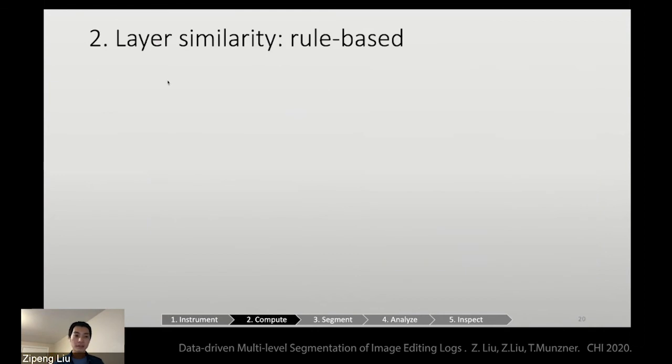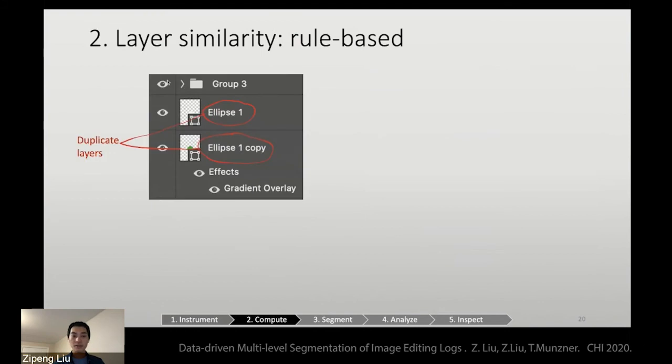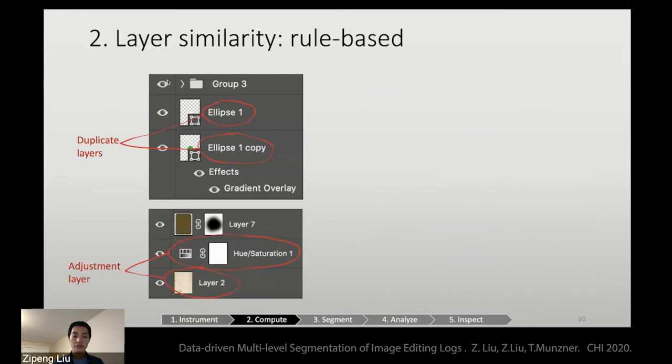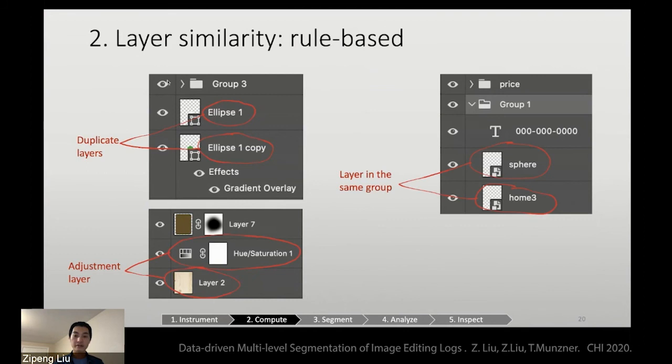The second measure is layer similarity. We are using a rule-based approach. For example, a layer ellipse 1 copy is the duplicate layer of ellipse 1. And this one shows two layers, one are the adjustment layers of another. And layer sphere, layer home 3, they are layers in the same group. We conjecture that if two layers have stronger relationships, two events will have larger similarity.